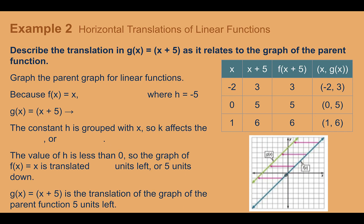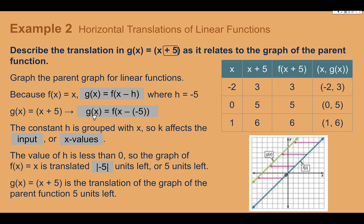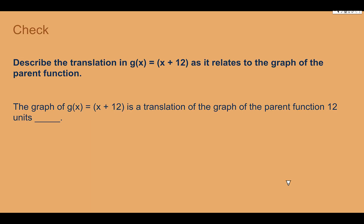Example 2 — horizontal translations: describe the translation of g(x) = (x + 5) as it relates to the parent function y = x. The plus five is done to x beforehand, inside parentheses. g(x) = x + 5 is really g(x) = f(x − (−5)), so h equals negative five. Because it's grouped with x, it affects the input. The translation is the opposite of what we see — opposite of plus five — so the graph moves five units to the left.